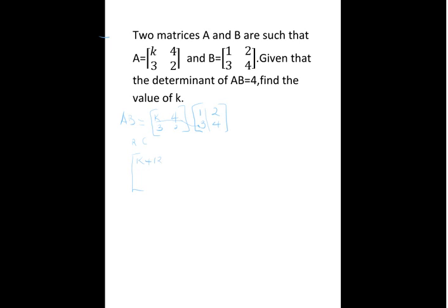Then, we take the same row, we multiply by the second column, that is 2K plus 16. Then, now we go to the second row, 3 and 2. So, 3 multiplied by 1, that is 3, plus 2 multiplied by 3, that is 6.